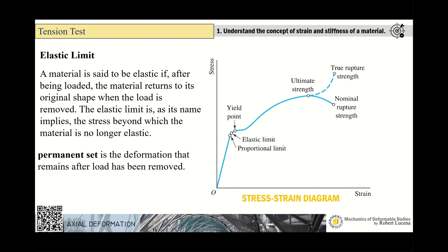After the proportional limit comes the elastic limit. A material is elastic if, after being loaded, it returns to its original shape when the load is removed. The elastic limit is the stress beyond which the material is no longer elastic and will exhibit a permanent deformation, called the permanent set.